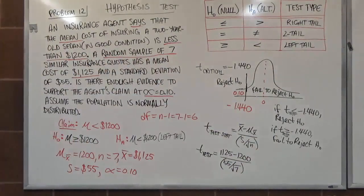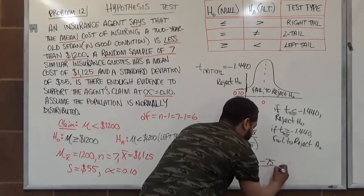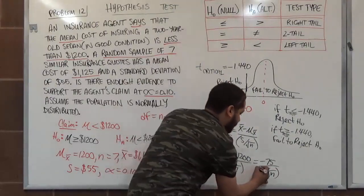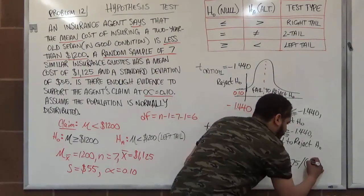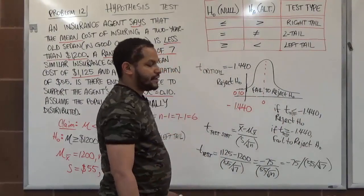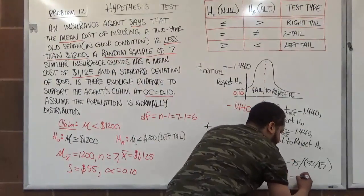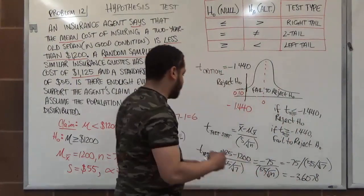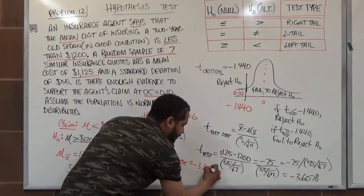Calculating carefully: the numerator is −75, and the denominator is 55 divided by √7. On the calculator, enter: −75 ÷ (55 ÷ √7). This gives −3.6078, which we round to t = −3.608.